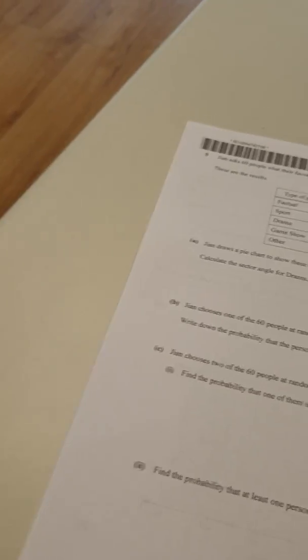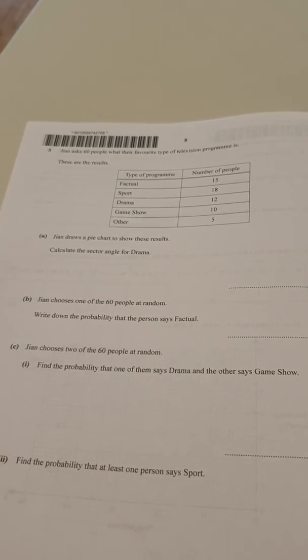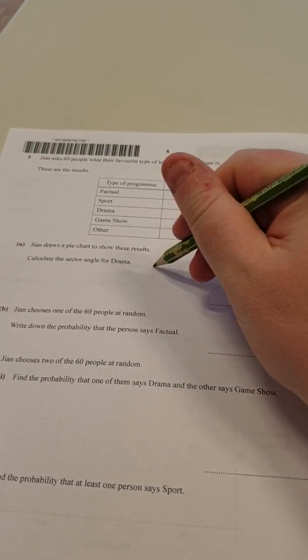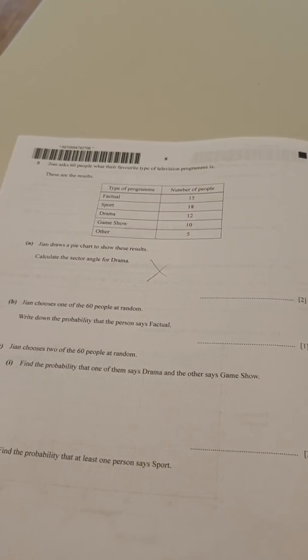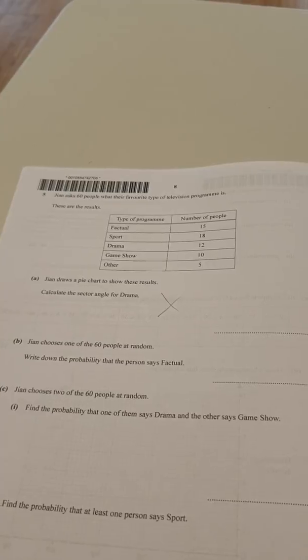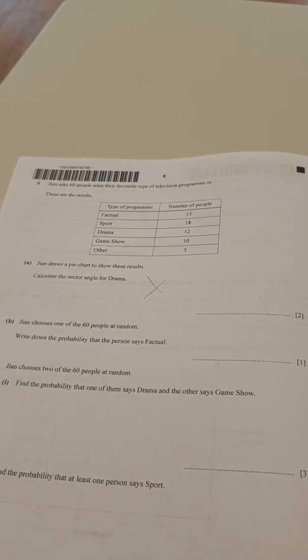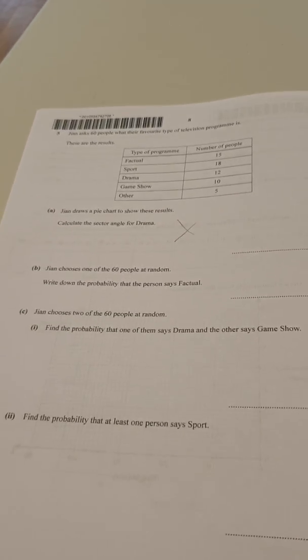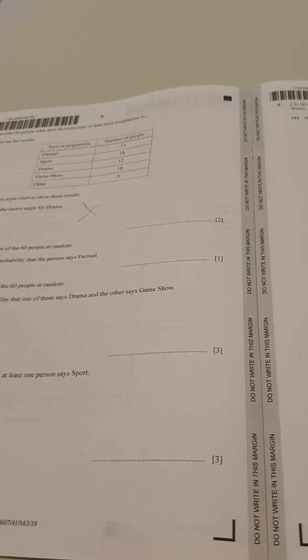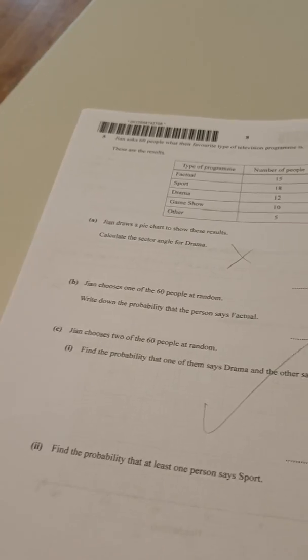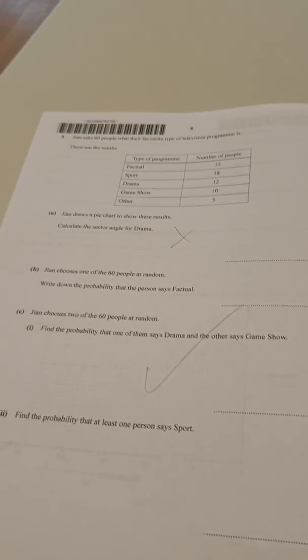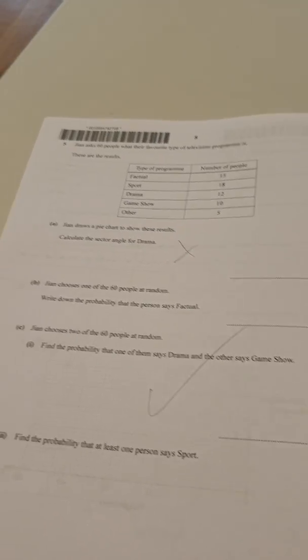Okay, so if we go on to our next part here, now pie chart specifically I did not predict, but you should know that from year seven or year eight really, and you only needed to work out the sector angle, so you didn't actually have to draw it, and then the rest of the question was a probability question for seven marks there. So the probability part I predicted, not the pie chart specifically, but you should know that anyway.